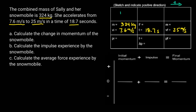I'm going to use this box to represent Sally and the snowmobile — initially going to the right, then accelerating and going faster. That means the force has to be in the direction it's moving. I'll draw a small force diagram there. I also need to include the mass since that doesn't change.